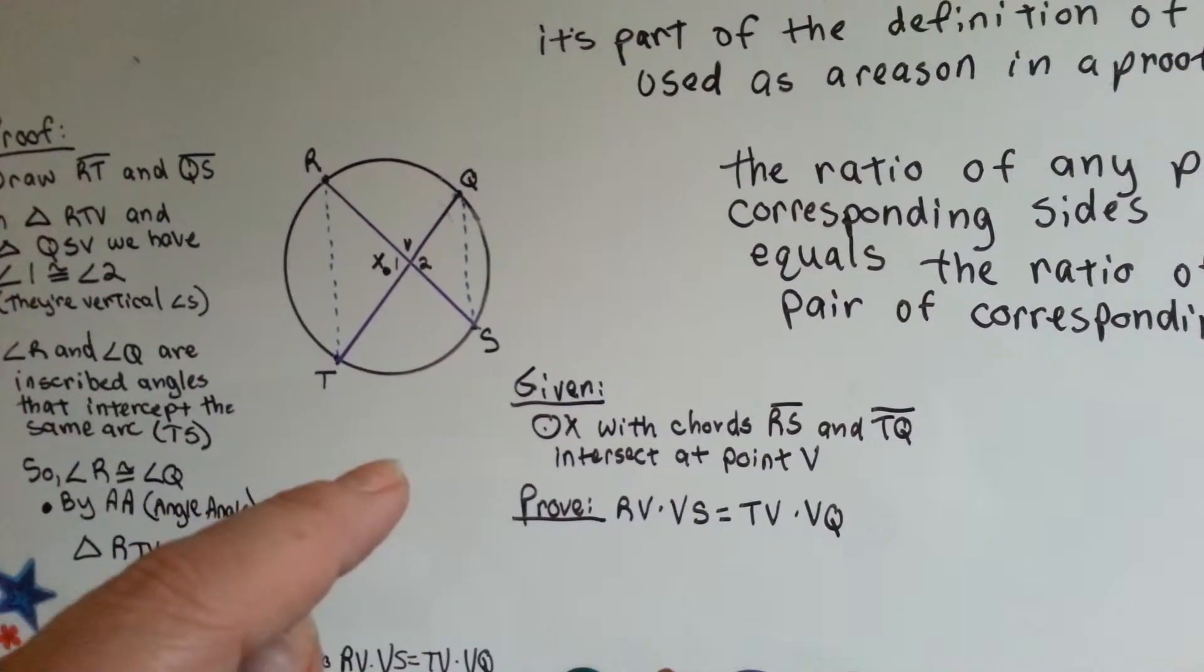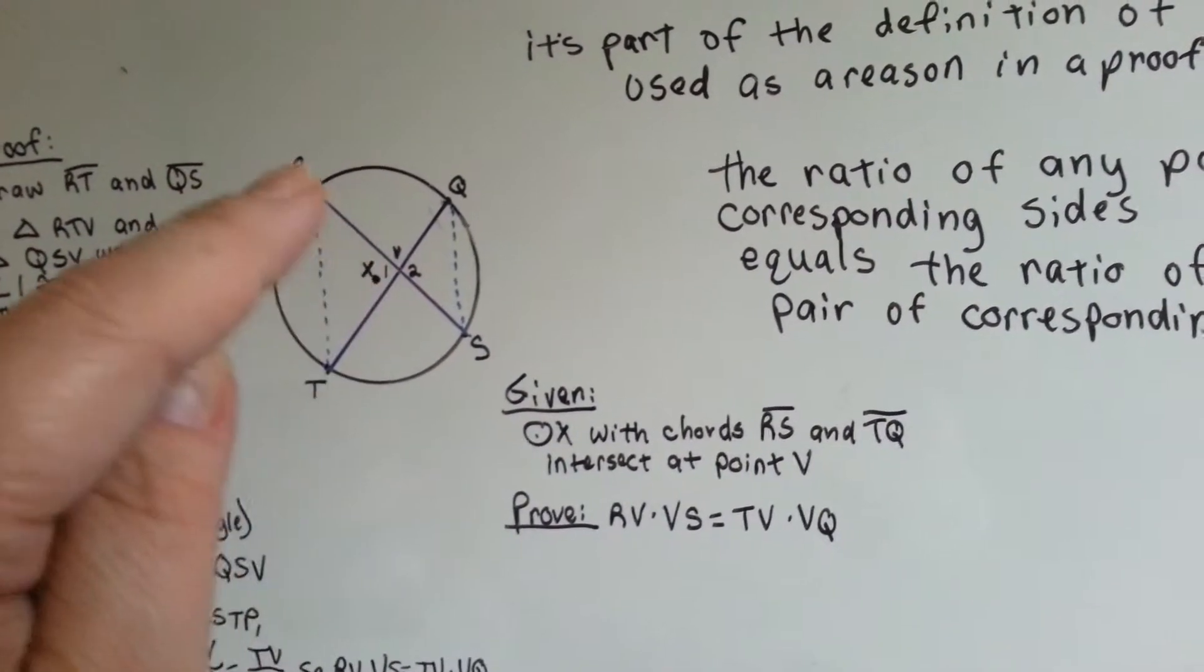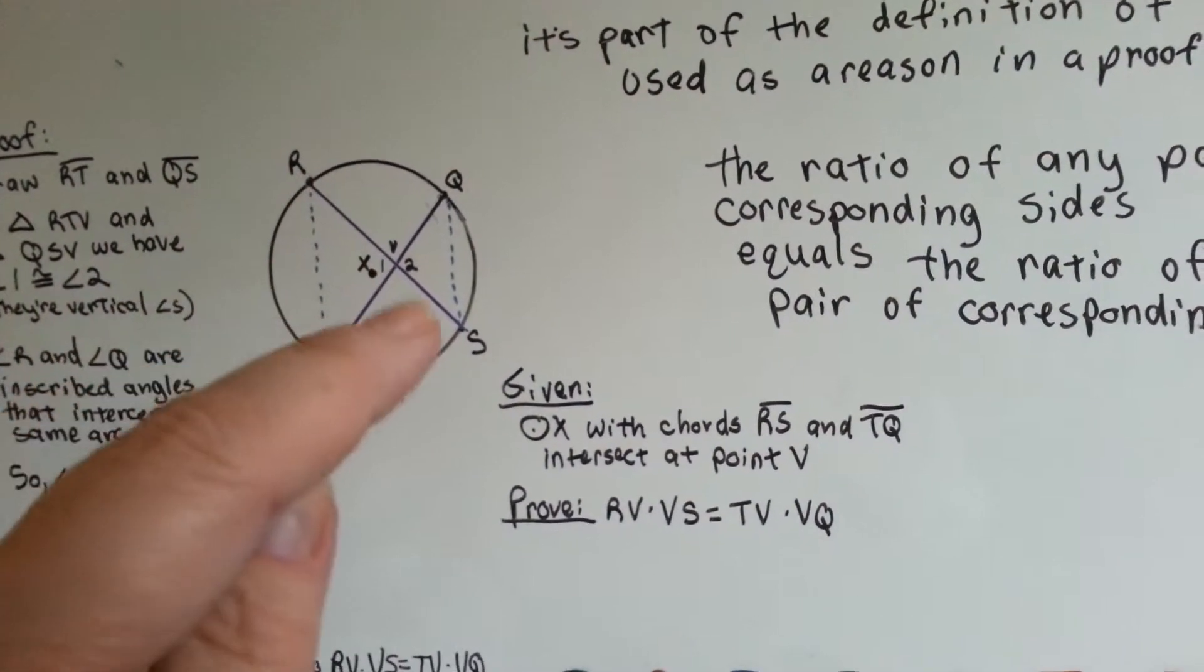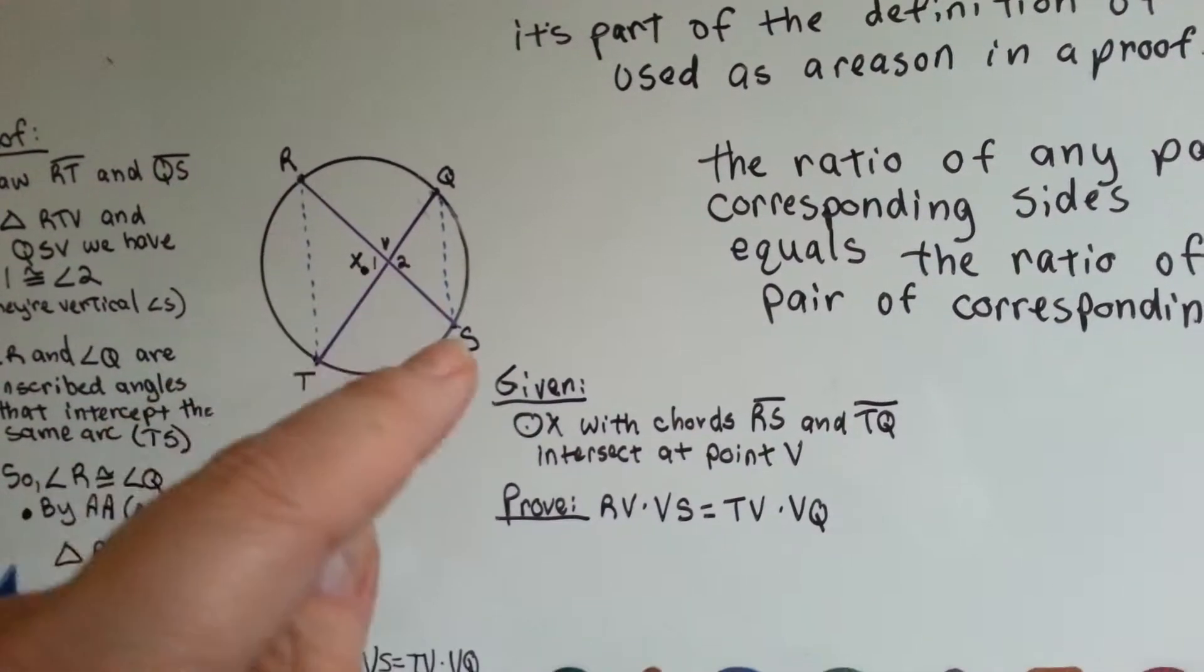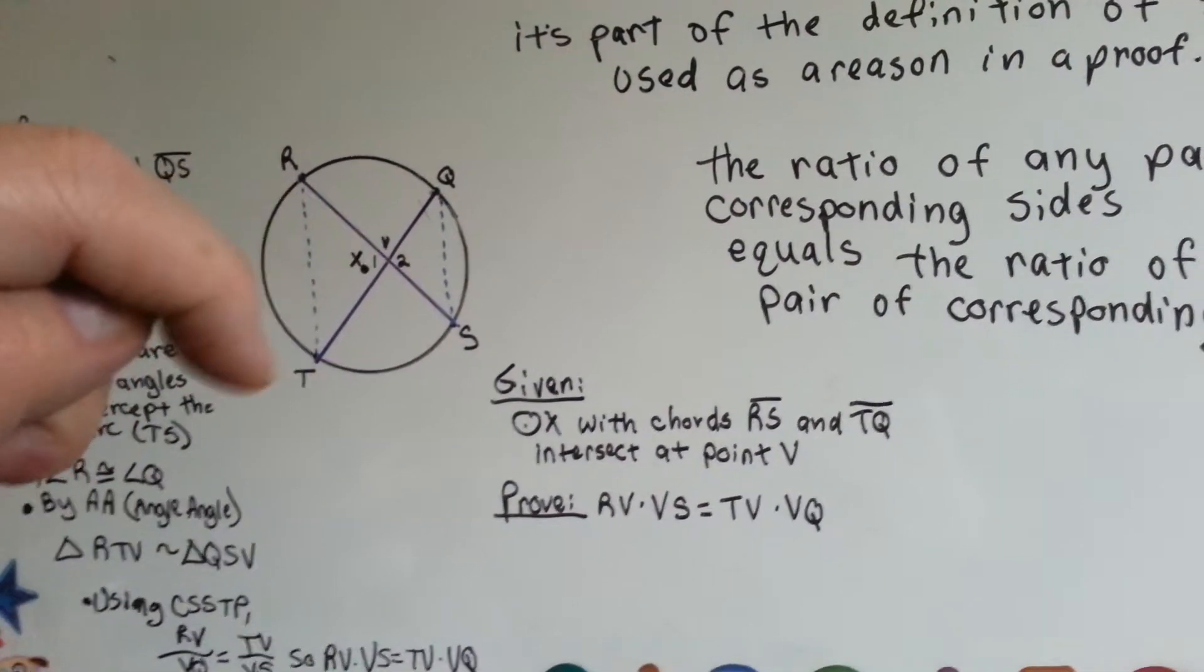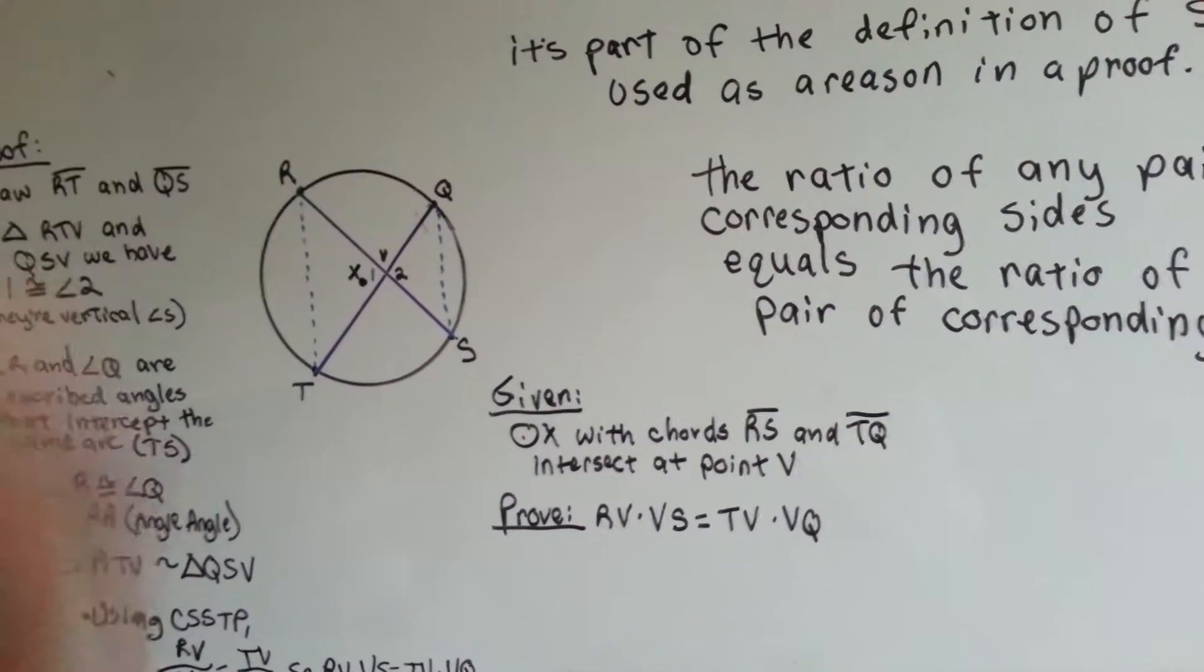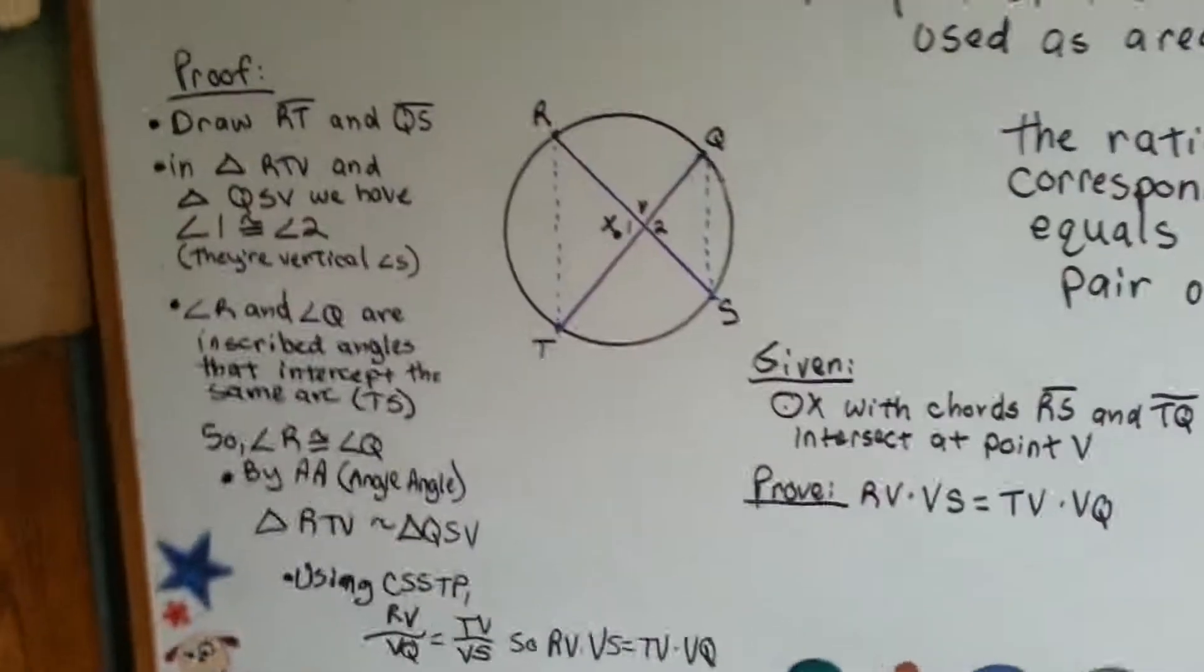We need to prove that RV, this little section here, times VS, right here, is equal to TV, right here, times VQ, right here. And here's how we're going to do it.